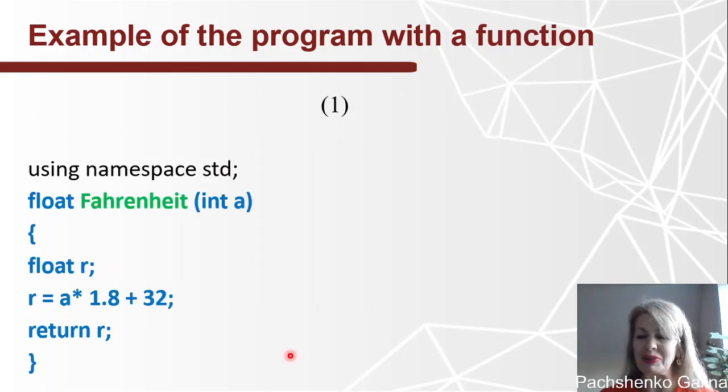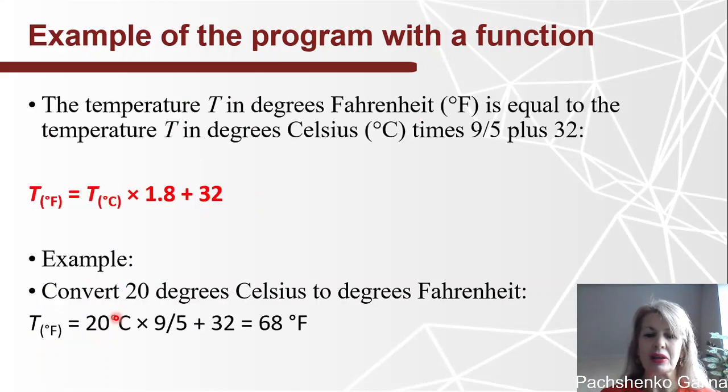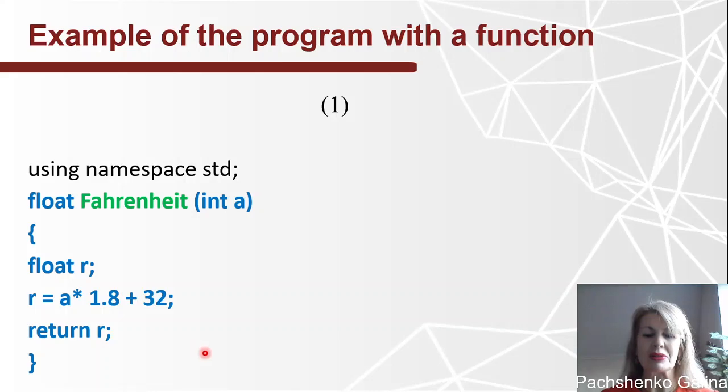And let's consider this program. This is our program here. I need to include iostream. Please do it. Float, this is the type of return value. Fahrenheit, this is the name of our function. This is our parameter a. We have only one number that is equal to, in this case 20, so it's int type. And here inside the function body, we declare variable r. It's float because here we have a number with a point. And we calculate our result: r is equal to a multiplied by 1.8 plus 32. And we return our result from our function.